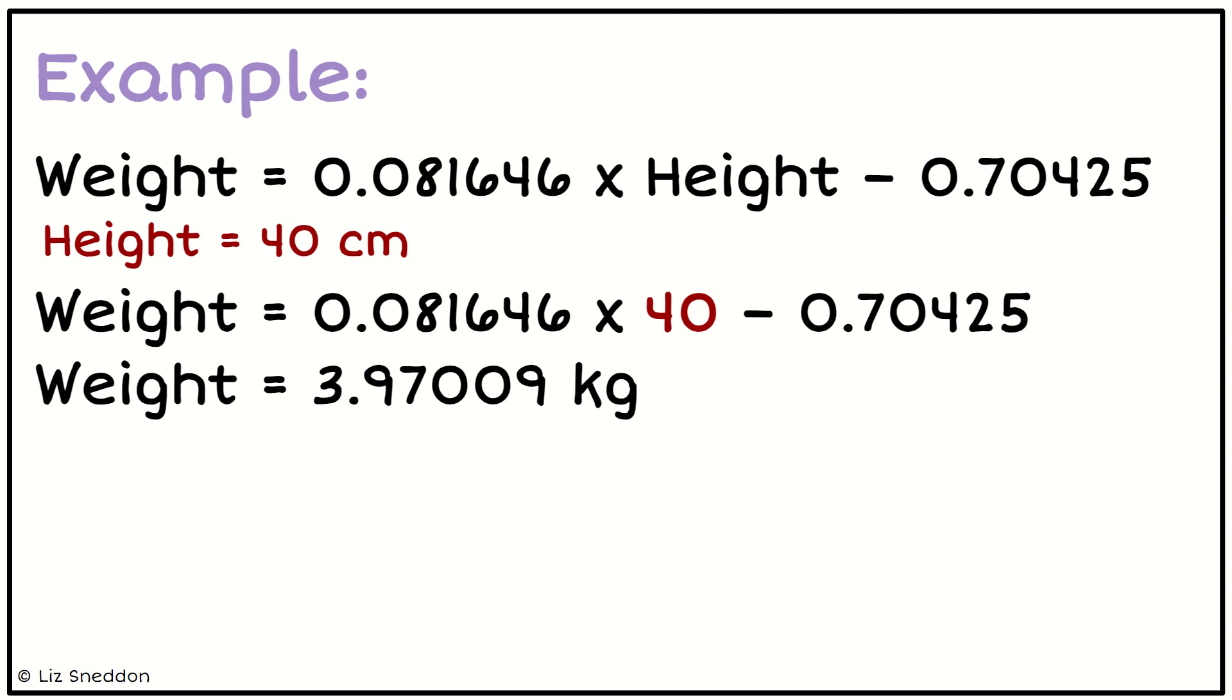And what I need to do now is I need to think, well how accurate is the original data? How reliable and accurate would any predictions be? I wouldn't expect that if I'm going out and weighing a kiwi that I'd get measurements accurate to five decimal places. So I want to round to something that's a bit more sensible.